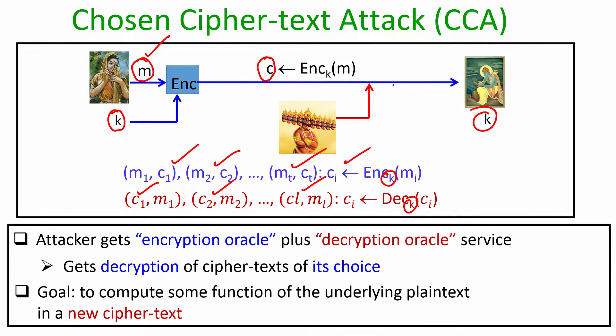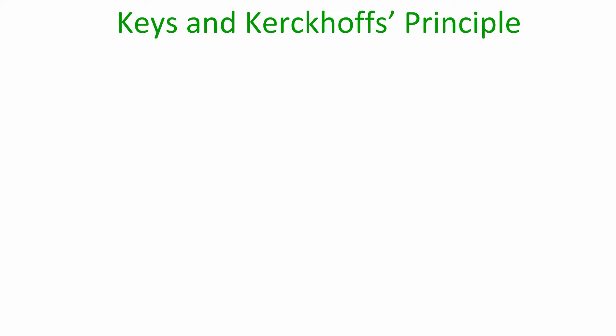These are the four attack models. When we say an encryption scheme is secure in the CCA model, we mean that even an adversary with access to both encryption and decryption oracles cannot compute any function of the freshly encrypted plaintext. When we say it is secure in the COA model, we mean that just by looking at the ciphertext, the adversary cannot compute any function of the underlying plaintext. These four models will be discussed rigorously throughout the course.